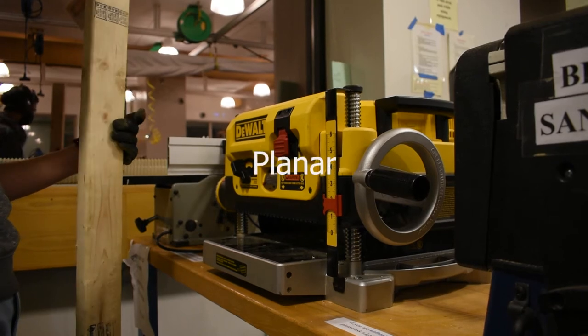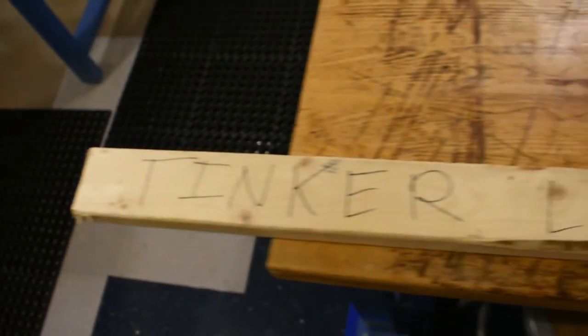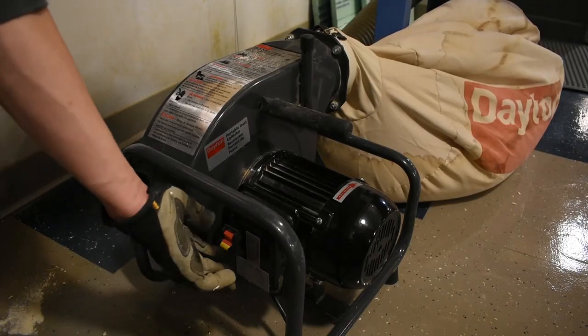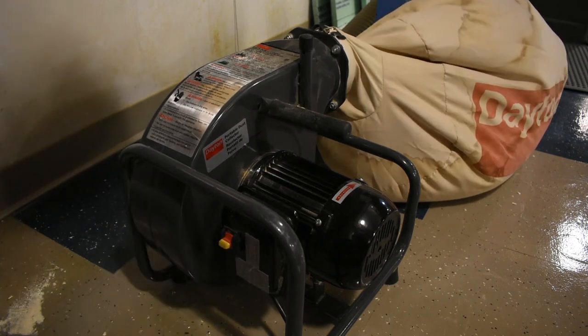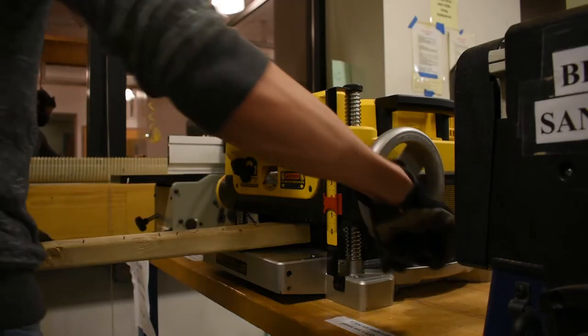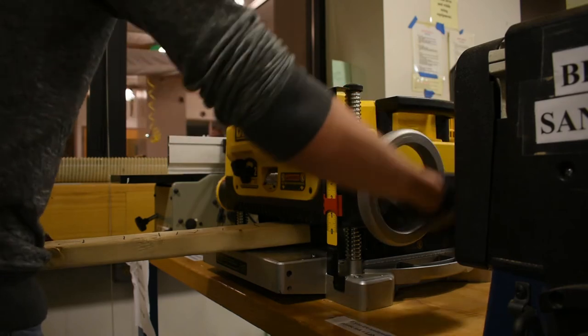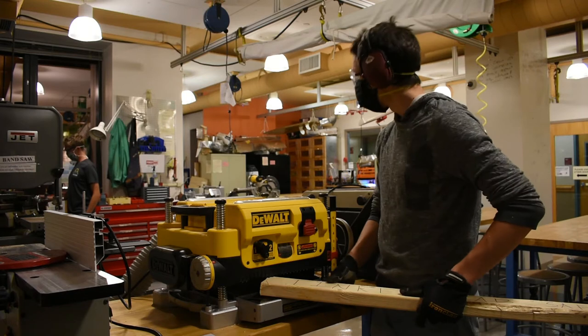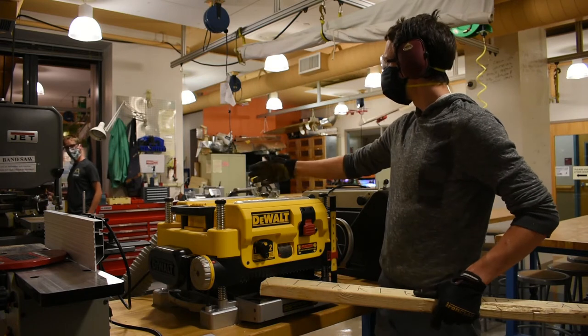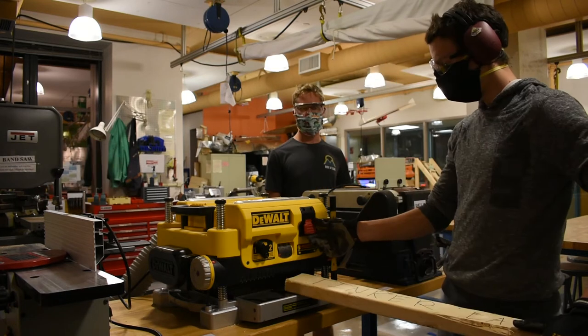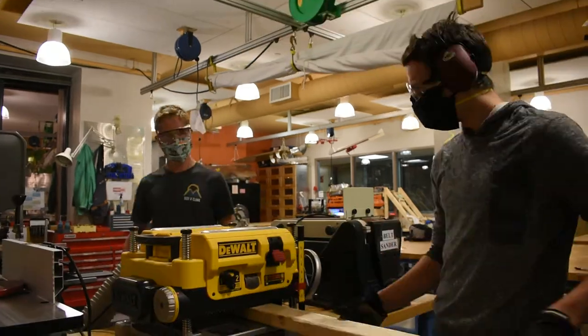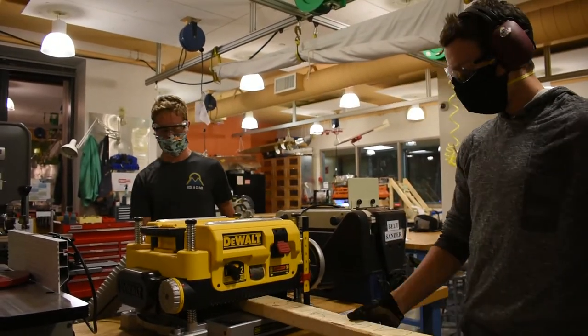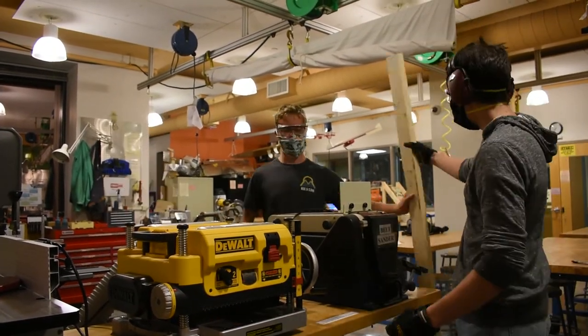The wood planer is used to create boards with even thickness throughout. First, turn on the vacuum to suck up the dust. Then adjust the height of the planer. Next, feed the wood stock into the machine. Once your stock is in, it'll be pulled through and there's no need to push. If your piece is too long, ask a friend or an advisor for help. Repeat this process until the desired thickness is attained and make sure to clean up any excess sawdust.